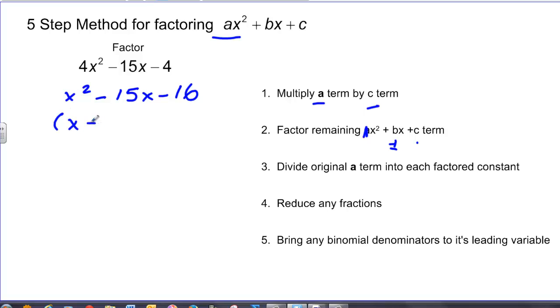So in this case, I have x minus 16 and I have x plus 1. Then in my third step, I'm going to take and bring back that original a term and divide it into each constant in these binomial products. So my initial multiple term was a 4, I'm going to take and divide each of those constant terms by a 4. So I have x minus 16 over 4 and x plus 1 over 4.